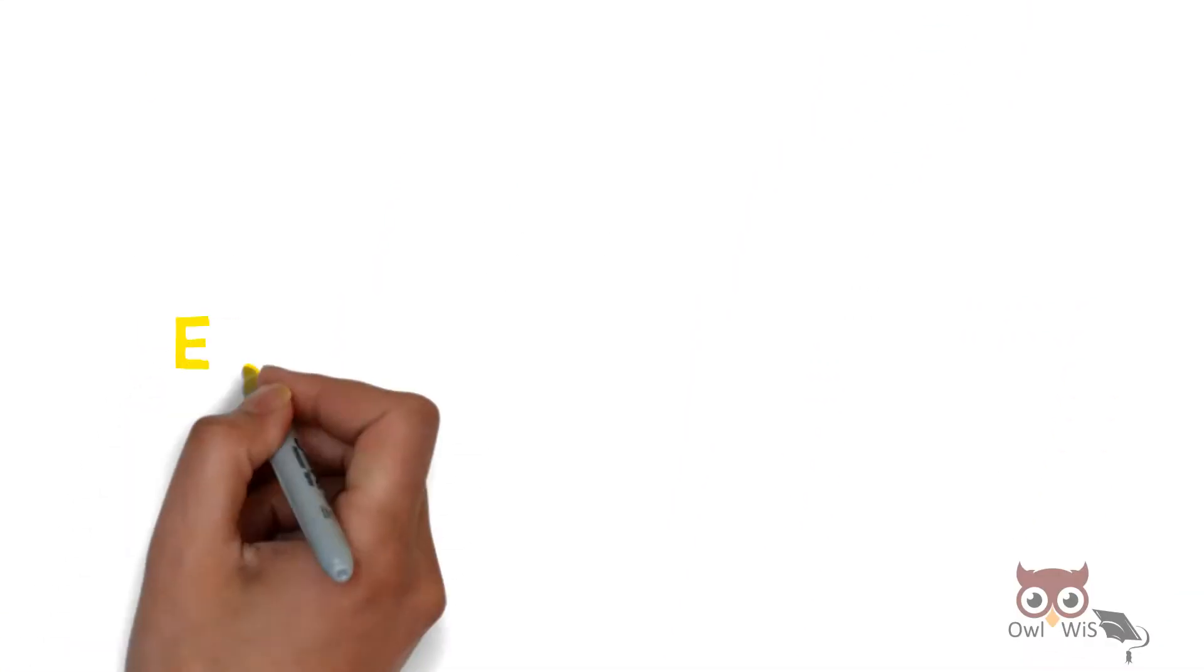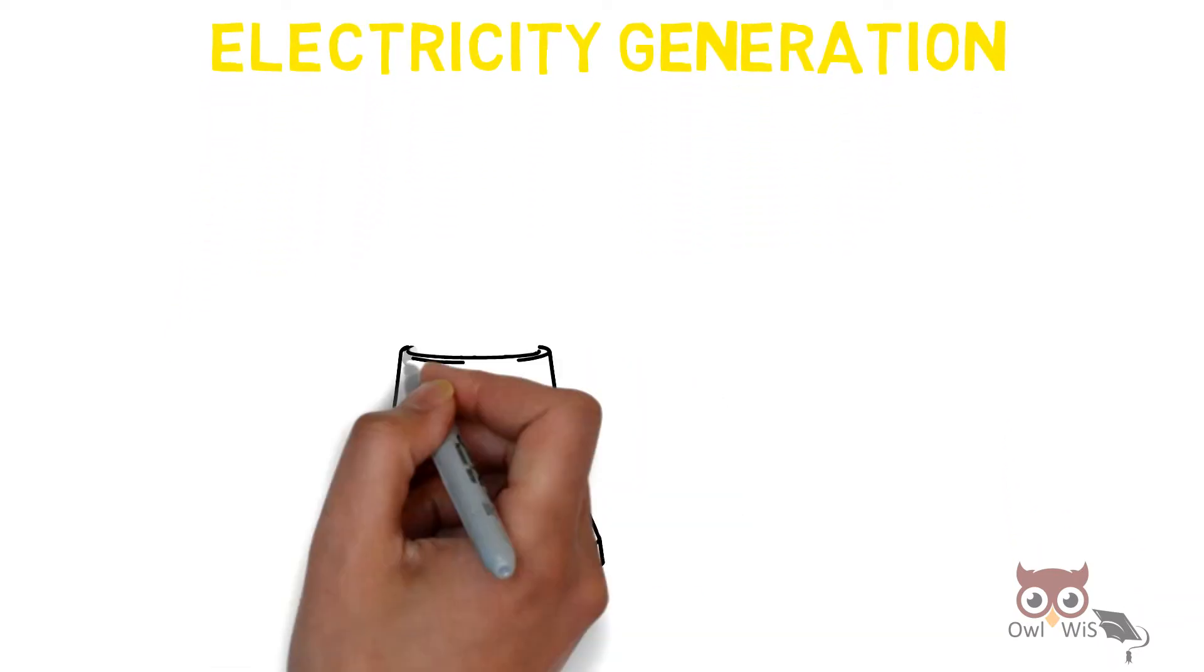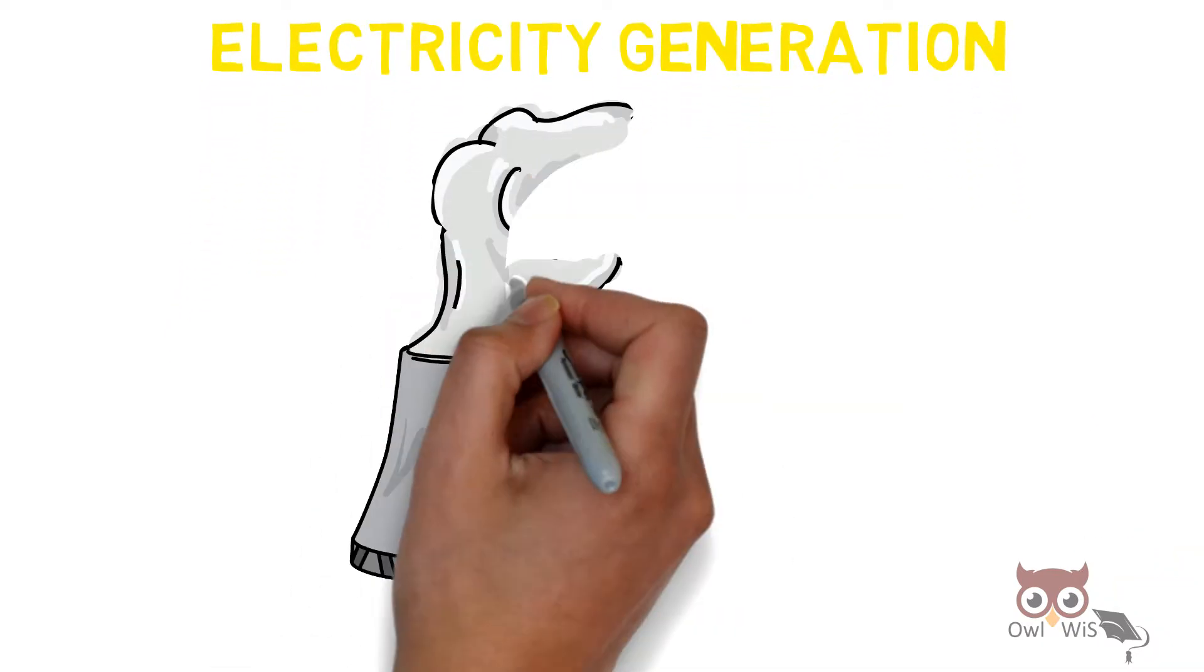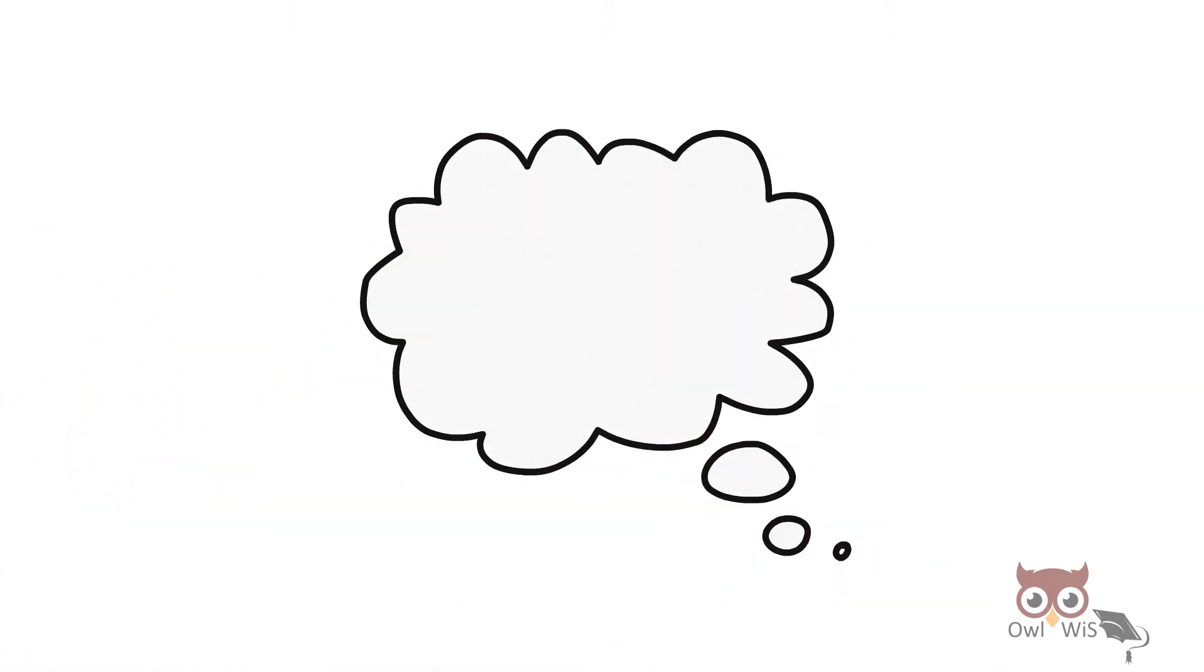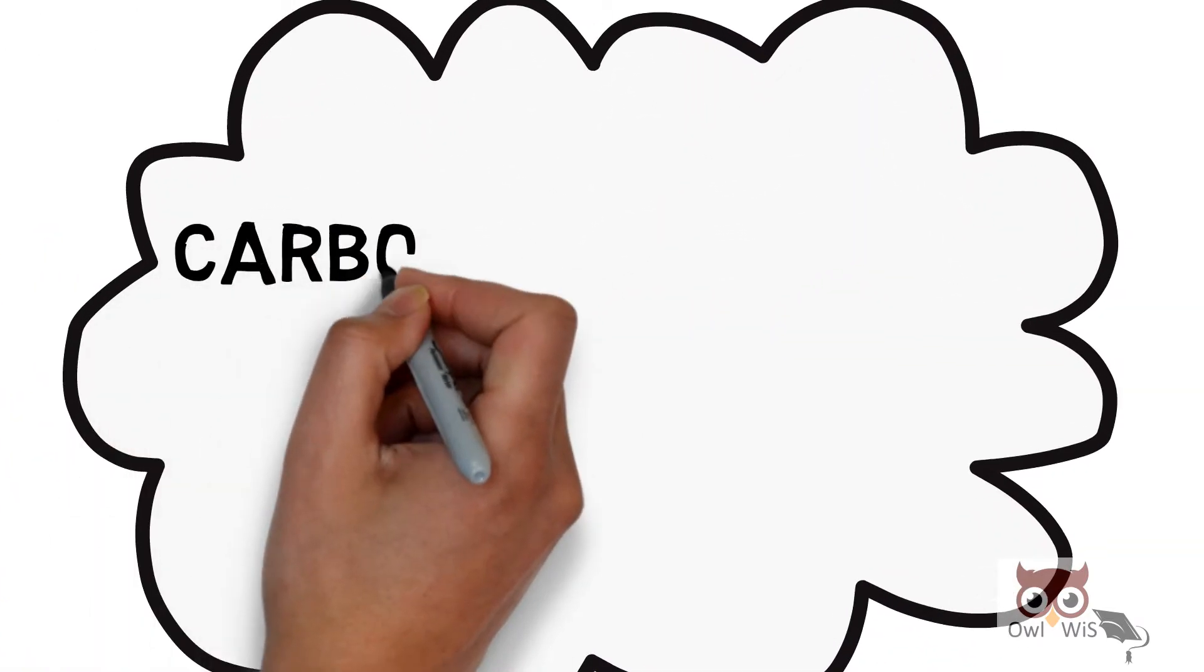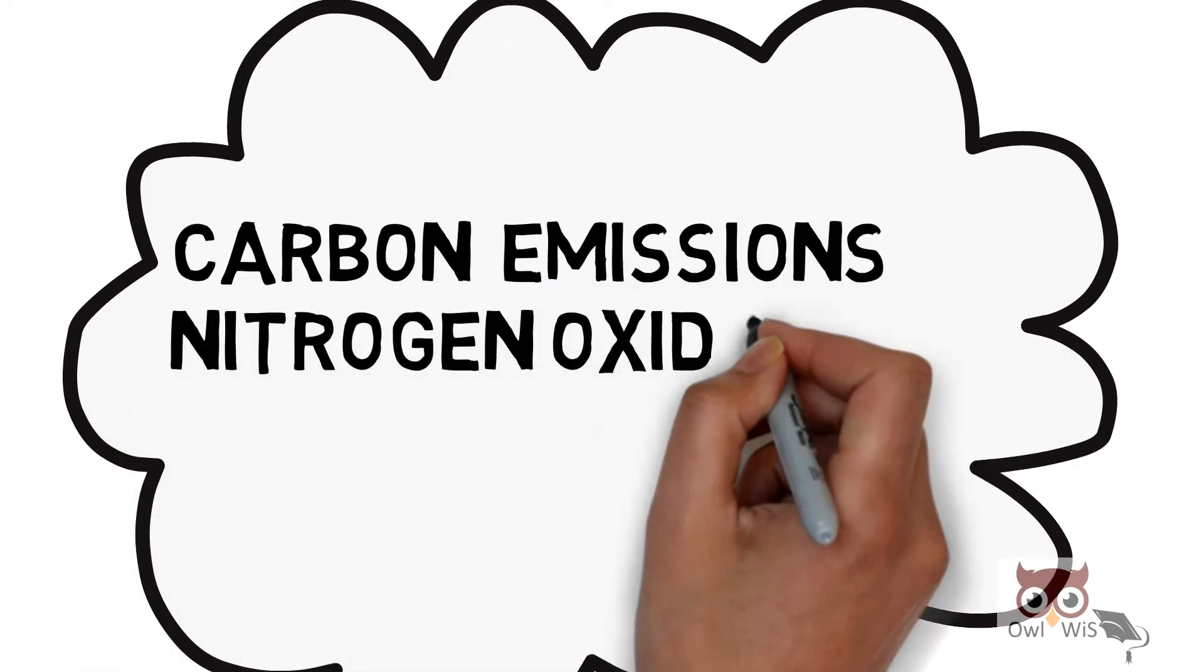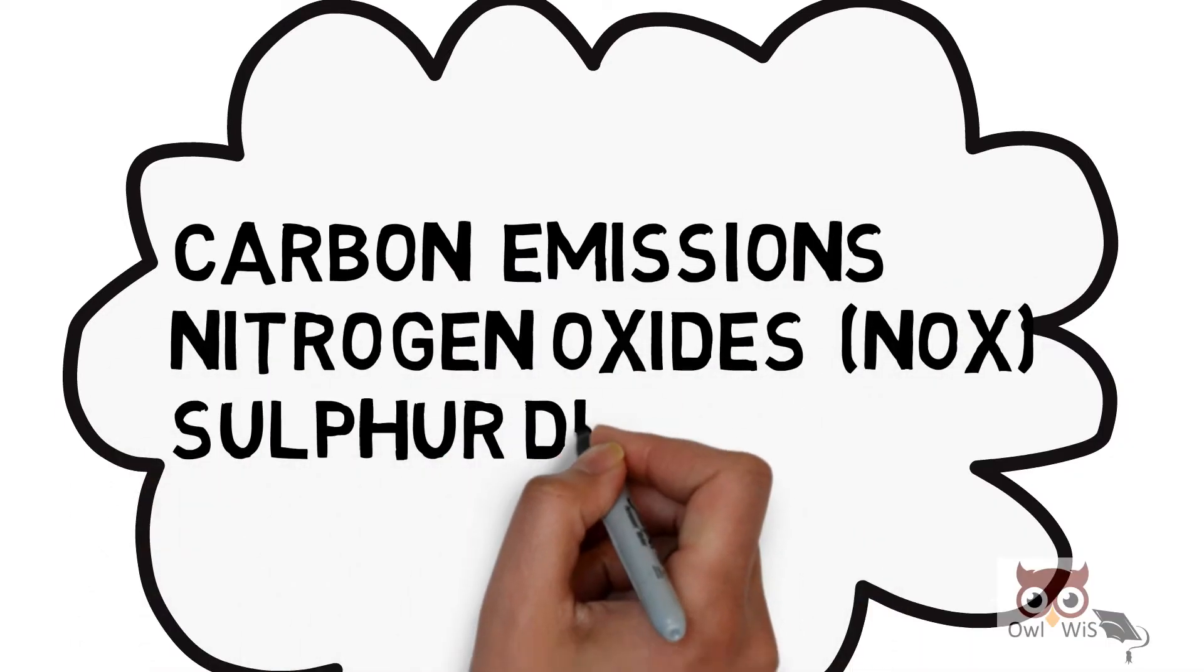The electricity generation process from fossil fuels, such as coal, produces emissions, such as carbon emissions, nitrogen oxides, also called NOx, sulfur dioxide.